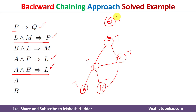Since L and M have become true, P becomes true. Because P is true, the conclusion Q becomes true. This is how we follow backward chaining from the query until all its premises become true. Once all the premises become true, the query will also become true. This is the simplest process we can follow in the backward chaining technique to prove a given query given a set of rules and facts.